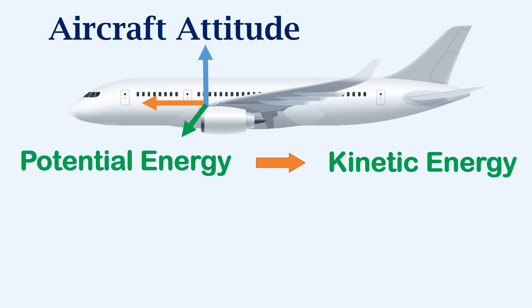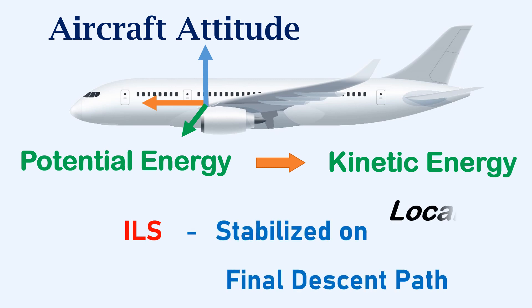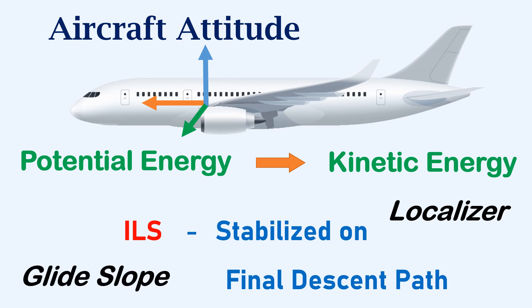If an instrument landing system or ILS is used for the approach, the aircraft should have captured and aligned with the localizer and glide slope signal of the runway on which the aircraft has to land. The ILS assists the aircraft in being stabilized on the final descent path.